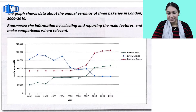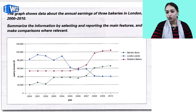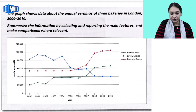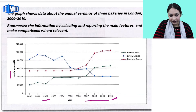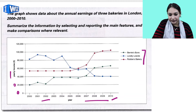First of all, I have a trend analysis graph here. Trend analysis means looking at what changes have occurred in a particular thing over the past few years. When we plot that trend on a graph, we call it a trend analysis graph. Here, the x-axis shows years from 2000 to 2010, and the y-axis shows yearly income starting from 0, going up through 20,000 and 40,000, all the way to 1,20,000. There are three elements: Burney's Buns, Lovely Loaves, and Robbie's Bakery.